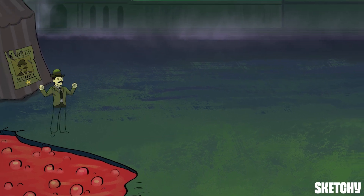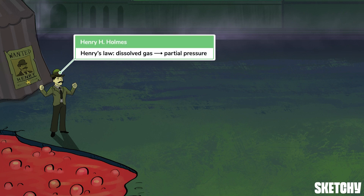To help teach us this concept, we brought in another well-known Henry — Henry Howard Holmes, an infamous historical figure dubbed America's first serial killer. Henry's standing right by this bubbling red pool, which is practically an admission of guilt, so he must be feeling some pressure. Henry's Law states that the amount of a particular gas dissolved in a solution is directly proportional to the partial pressure of that gas above the surface of the liquid. So the more gas you have dissolved in a liquid, the greater the partial pressure of that gas. In physiology, the partial pressure of oxygen in blood is due to the amount of dissolved oxygen, not bound oxygen.